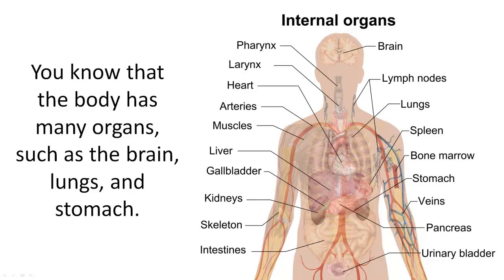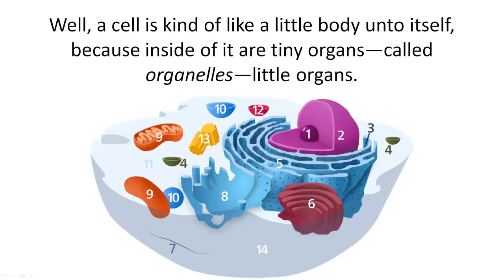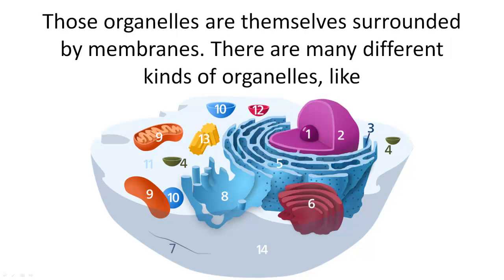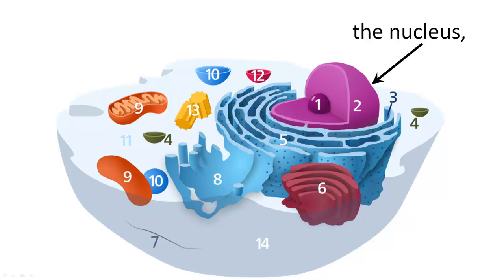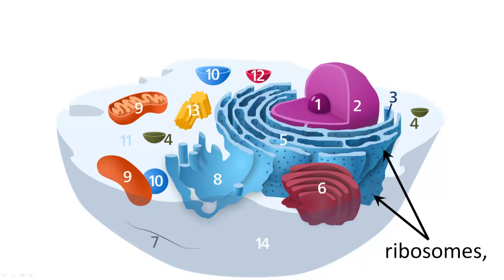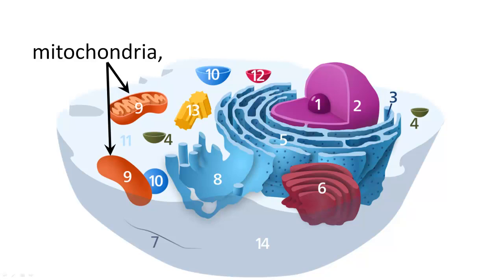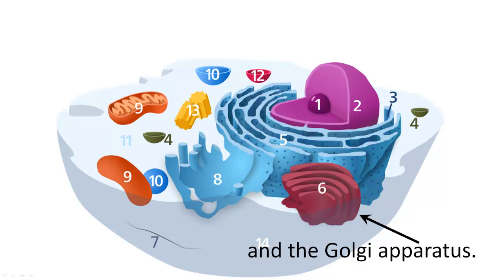You know that the body has many organs such as the brain, lungs, and stomach. Well, a cell is kind of like a little body unto itself, because inside of it are tiny organs called organelles — little organs. Those organelles are themselves surrounded by membranes. There are many different kinds of organelles, like the nucleus, ribosomes, mitochondria, and the Golgi apparatus.